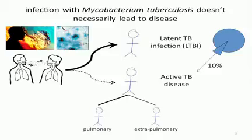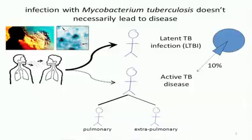The bug that causes TB is called Mycobacterium tuberculosis. It's passed from person to person by coughing, largely by generating infectious aerosols. This patient has a chronic pneumonia in his lungs which causes big cavities — it blows holes in the lungs. When he coughs, he generates enormous aerosols that mostly we don't see unless you use some sort of heat map.